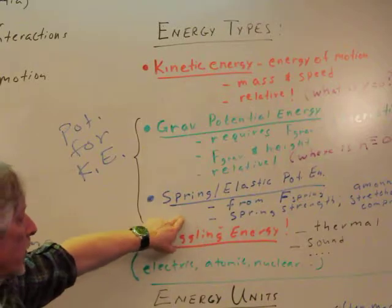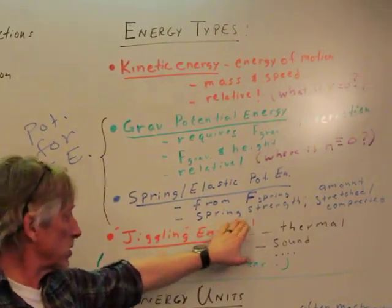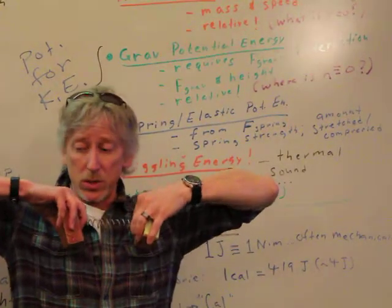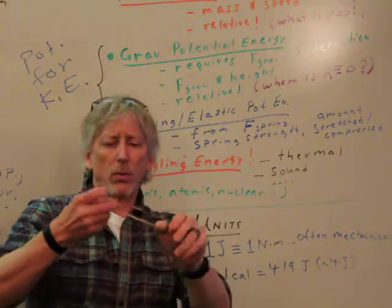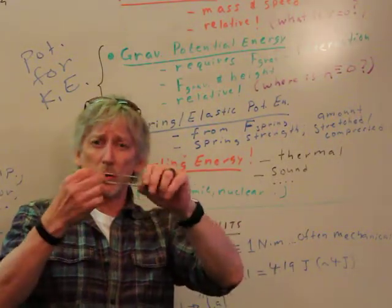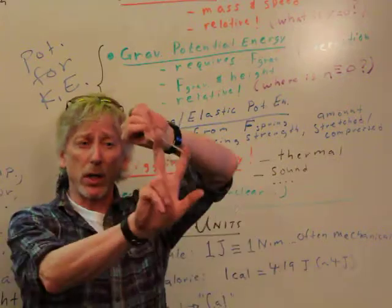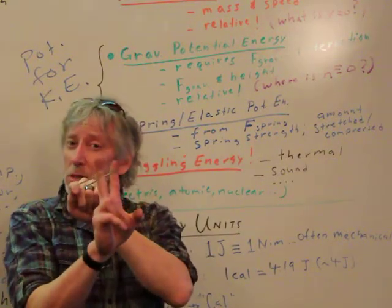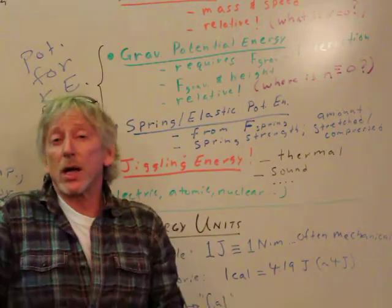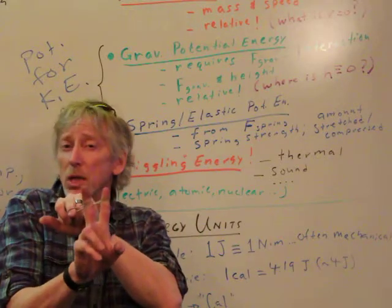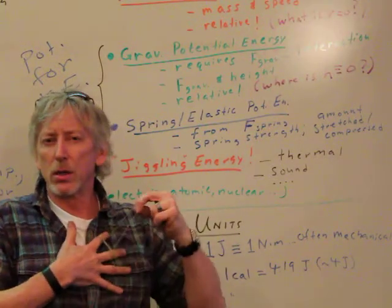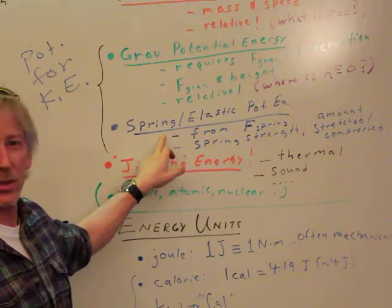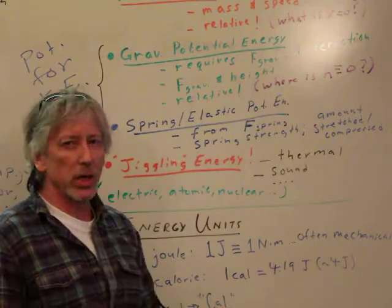Springs have elastic potential energy from the force of a spring. It depends on the strength of the spring and the amount of stretch or compression. Rubber bands have elasticity — stretch them and there's potential for motion, potential for kinetic energy. It has the ability to hurt, so it has energy. That's your elastic or spring potential energy: how strong the spring is and how much it's stretched.